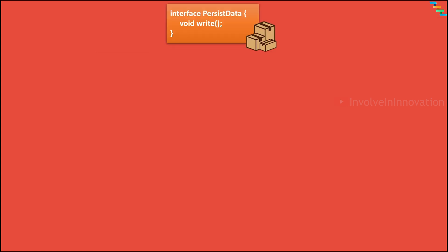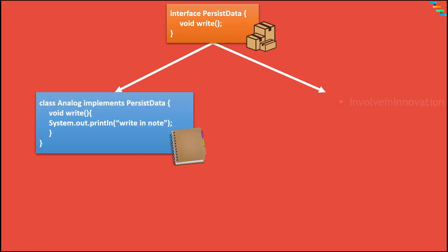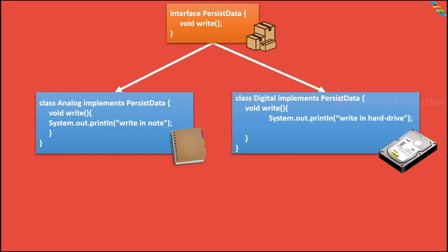Let's say we have an interface named PersistData with an abstract method. I create two different concrete classes which implement this interface. The first is an Analog class that implements PersistData and has a write method that prints 'write in note'. The second is a Digital class that also implements PersistData and prints 'write in hard drive'.